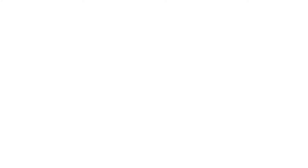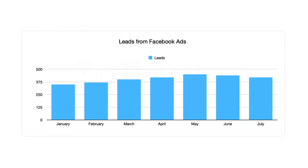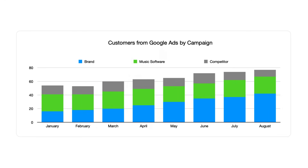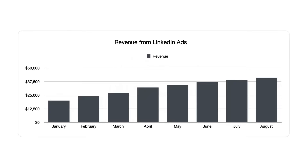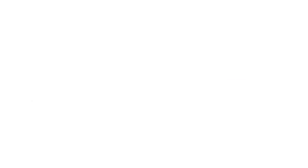You can then run reports that show you things like how many leads you got from your Facebook ads, how many customers you got from each of your Google Ads campaigns, or how much revenue you made from your LinkedIn ads. To learn more and start a free trial, visit Attributor.io today.